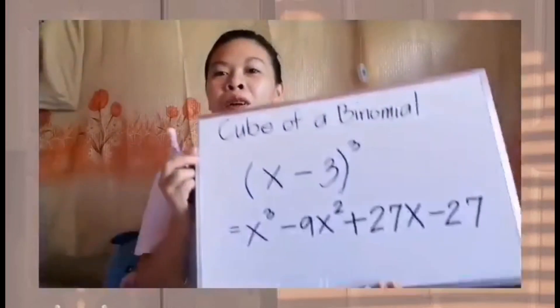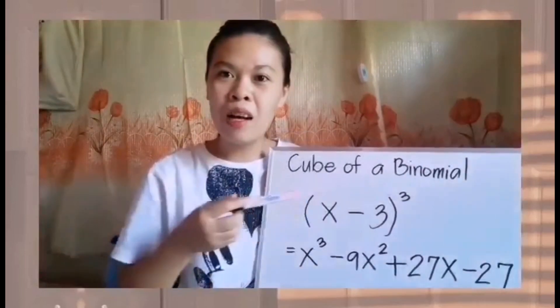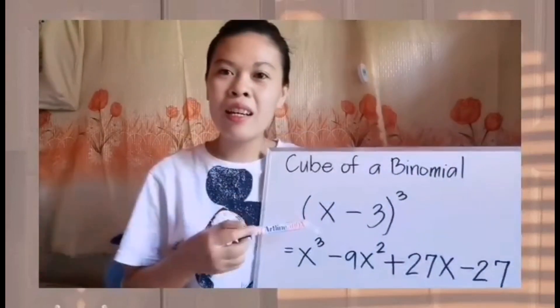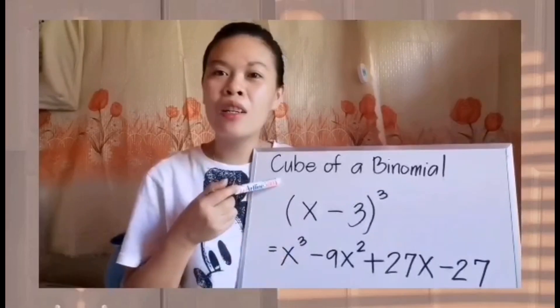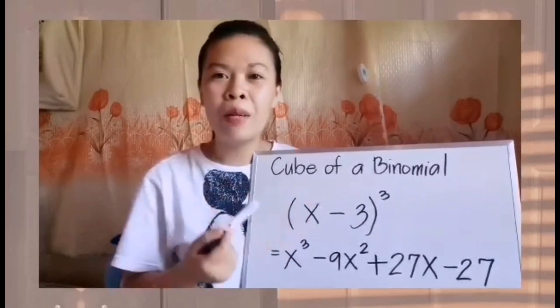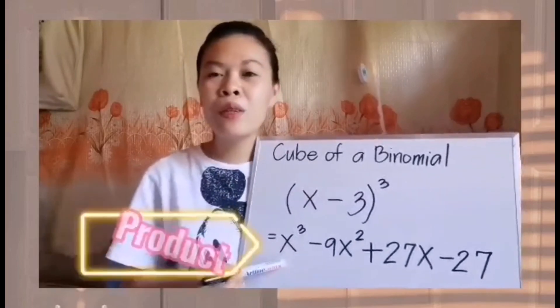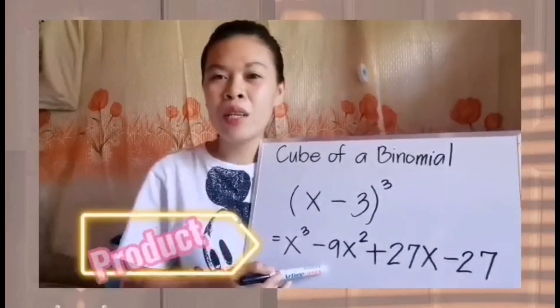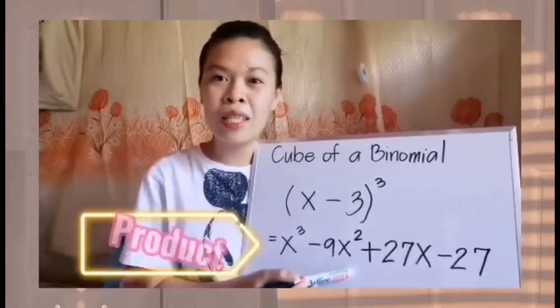Now let us have our second example in getting the product of the cube of a binomial. We have here our second example: the cube of the quantity of x minus 3. The cube of our binomial is equal to x cubed minus 9x squared plus 27x minus 27.